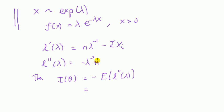So it's going to be minus the expected value of minus nλ^(-2). Remember what we said about parameters: they are constants. The expected value of a constant is the constant itself, and minus and minus is a plus, so the answer is n/λ². That's the information number.